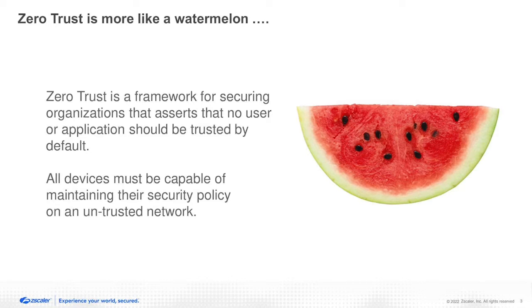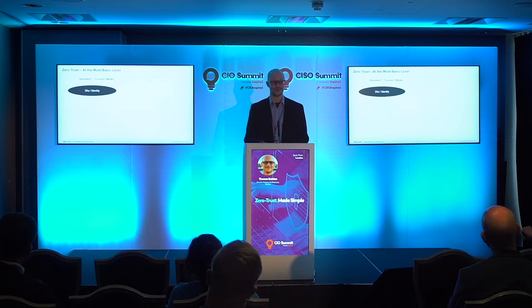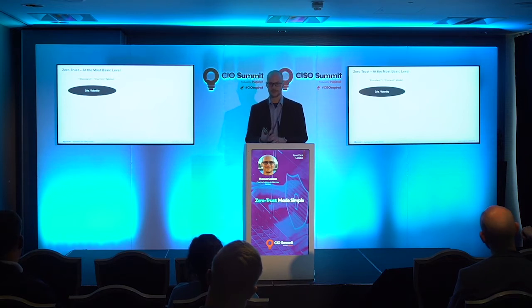Zero trust is a framework for securing organizations. That fifth rule again: the particular device, the particular identity, needs to be secure regardless of the actual network that that user or device is on. If we think about the security we've been providing to organizations for pretty much our entire careers — mine goes back 25 years — we have been doing several things. The first in the standard model is going to be the three A's: authentication, authorization, and auditing or accounting. We have to make sure people are who they say they are, that they are allowed to use the system or service in question, and that we keep track of what they're doing for security.